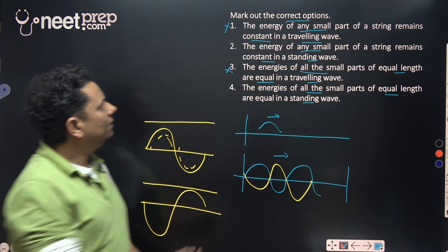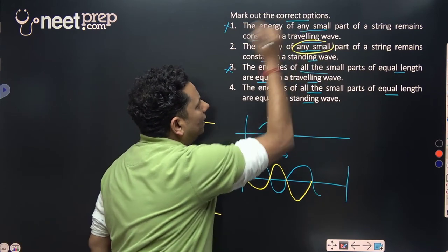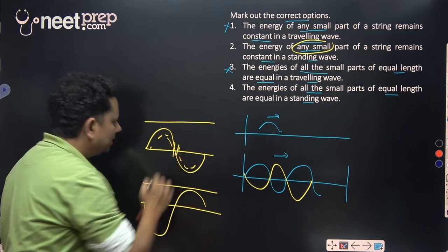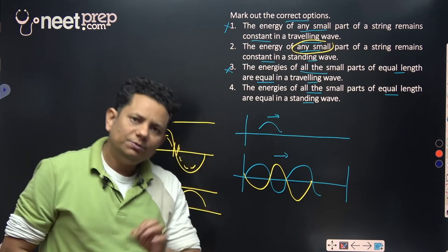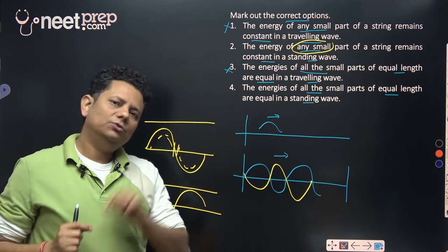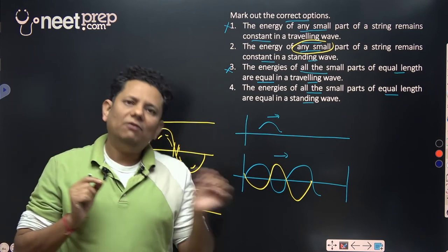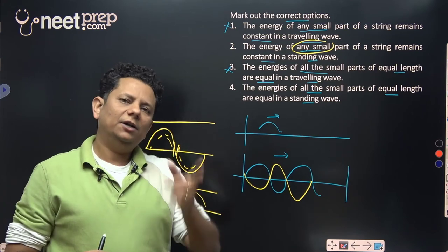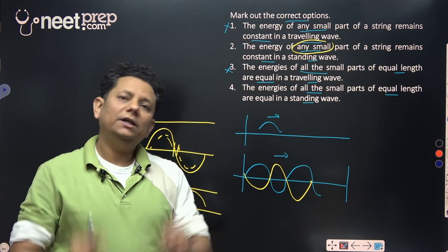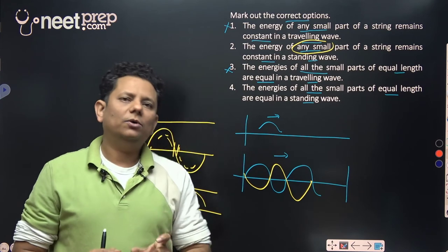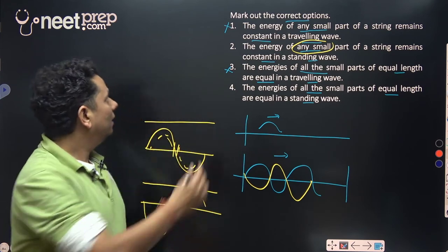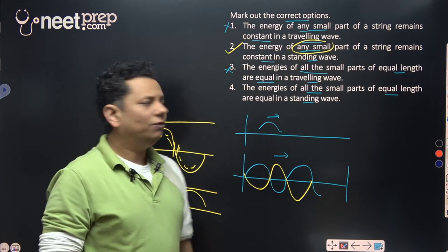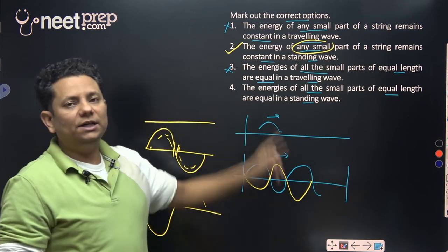In this scenario, we say that the energy of any small part of a string remains constant. If you look at this small part, the energy will be conserved because the energy is not traveling. The energy hits here and comes back, so the wave energy converts from kinetic to potential to potential to kinetic, and energy of each small portion is conserved. So this is the correct option.